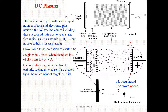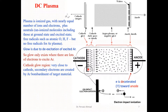The cathode glow region is very close to the cathode target. What happens in the cathode glow region is that secondary electrons are created by the argon bombardment of the target material. So in the cathode glow region, we basically have the production of secondary electrons by argon bombardment of the target materials.